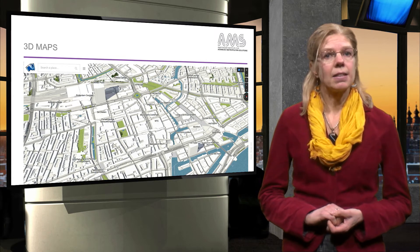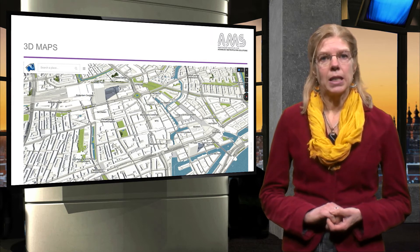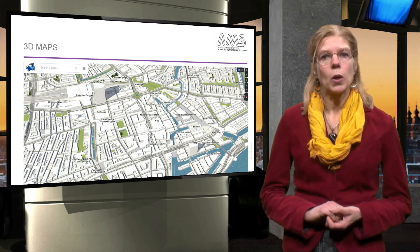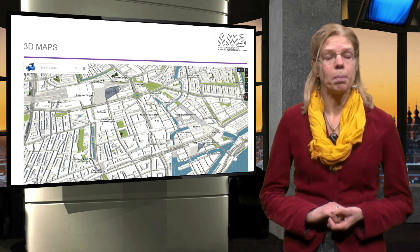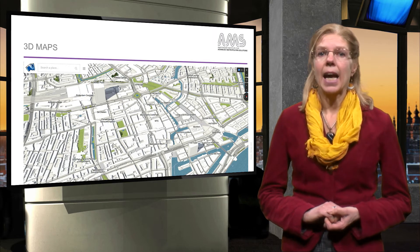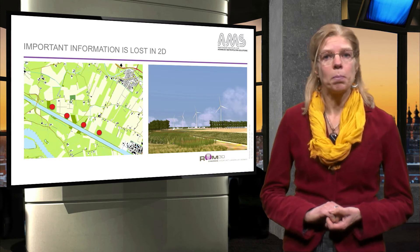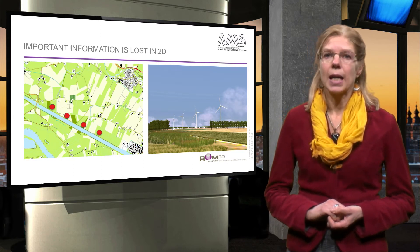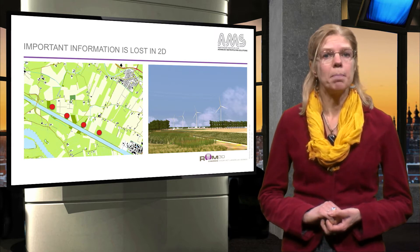Spatial planning is still mainly done based on 2D maps and databases with GeoInformation that support location-related policies, like the European Environmental Act INSPIRE, building registers, land use plans and cadastral maps. This is a problem because important information is lost when our 3D reality is made flat to fit within 2D map-based data.